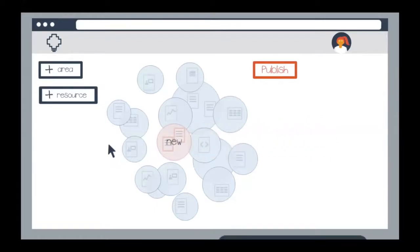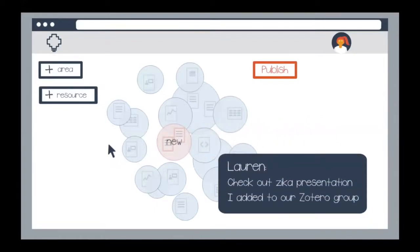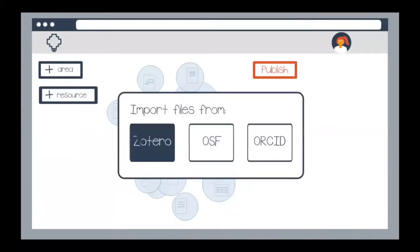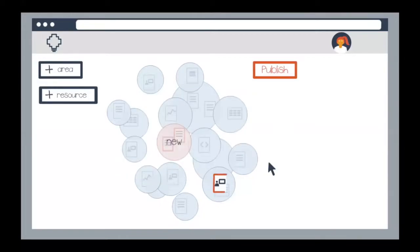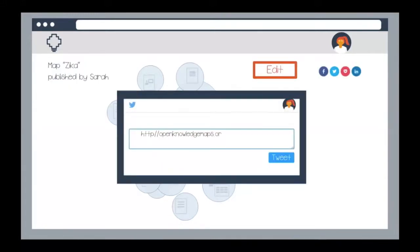Sarah is interrupted by a message from her supervisor, Lauren. Lauren suggests a presentation related to the Zika virus that she's added to their joint Zotero group. Sarah connects OK Maps to her Zotero account and imports the presentation into her map. OK Maps automatically places the new content on the map. Sarah publishes and tweets the link of her map for other users to explore and modify.